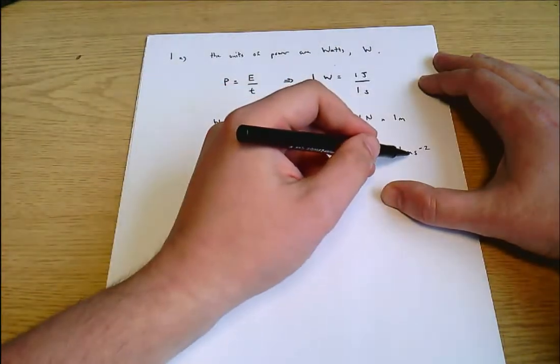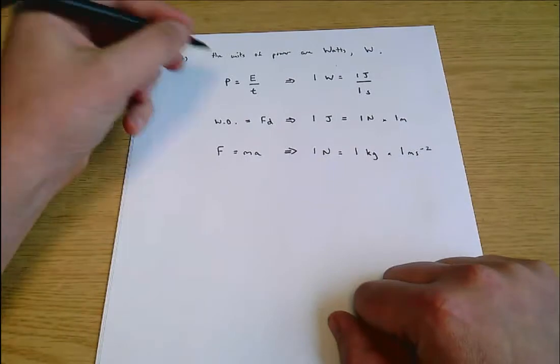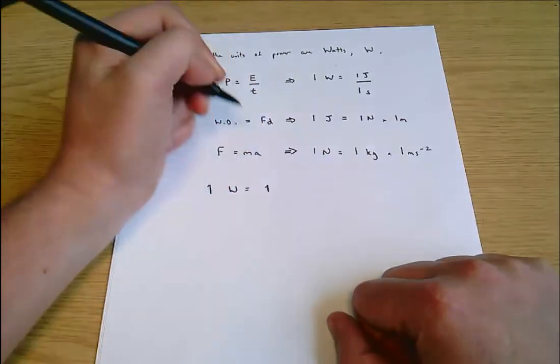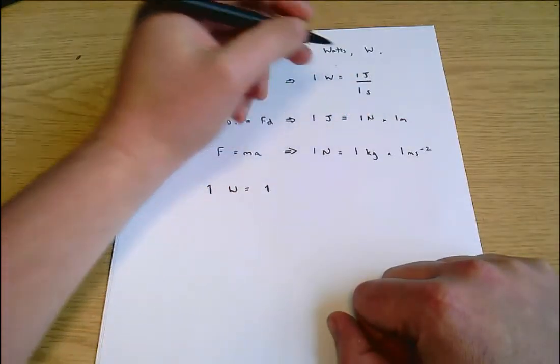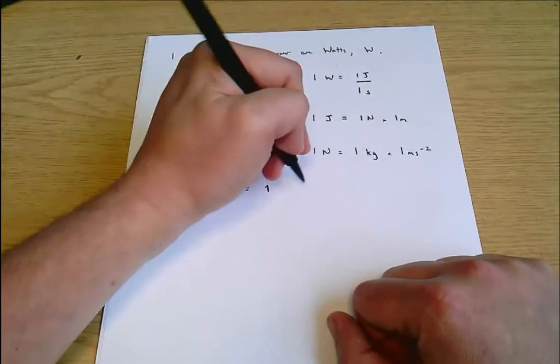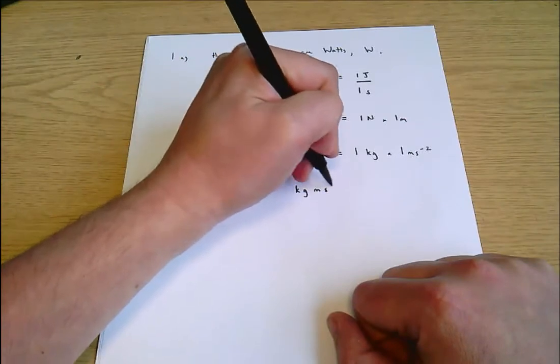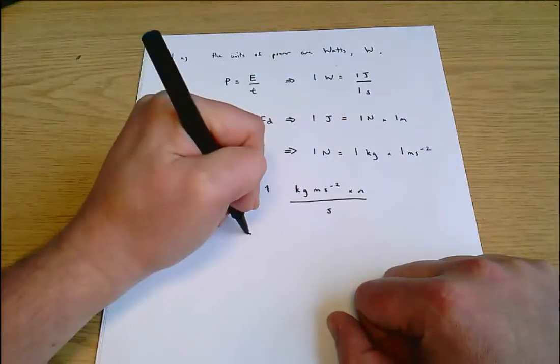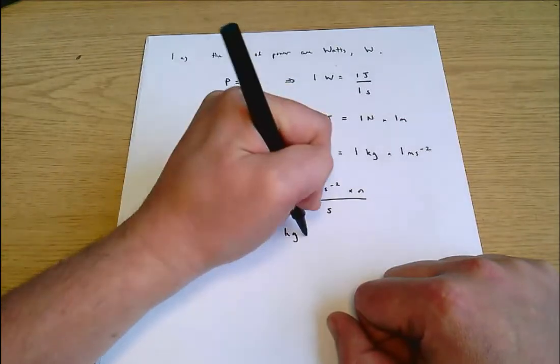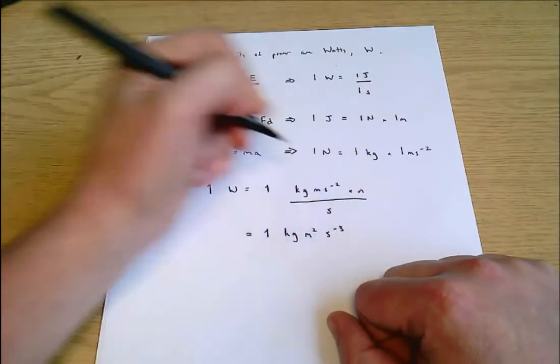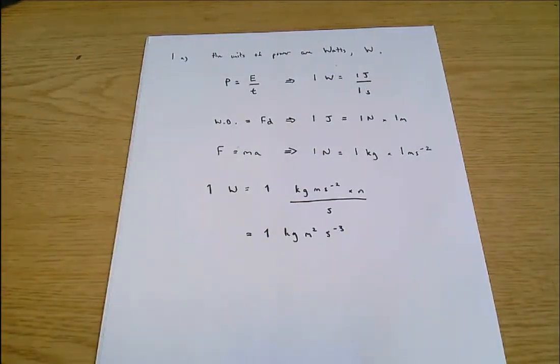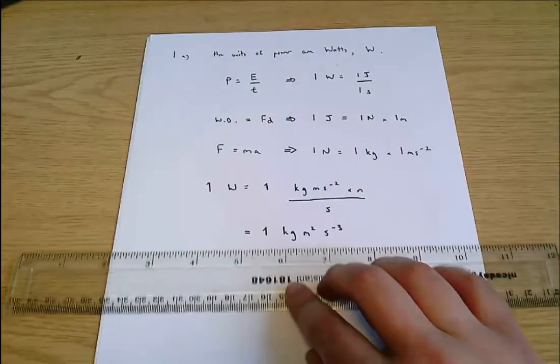Putting all of this together, we get that one watt equals one joule, which is a newton times meter, which is kilograms times meters per second per second times meters divided by one second, equals one kilogram meter squared per second cubed. And that's the answer. I'm just going to underline it there and move on to part B.